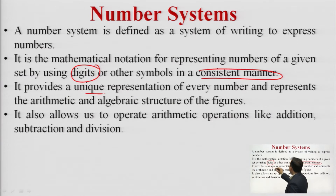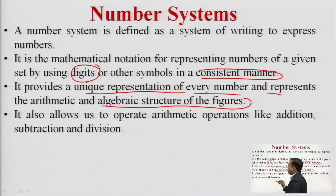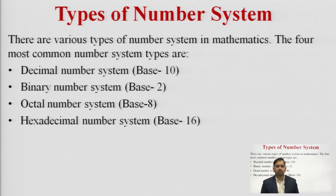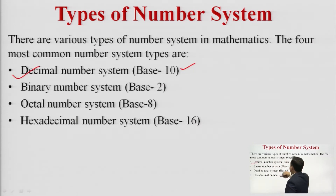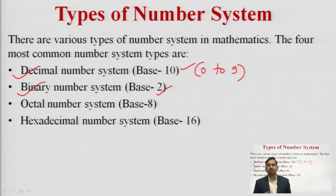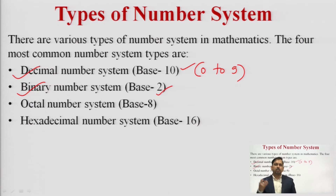The number system provides a unique representation of every number and represents the arithmetic and algebraic structure of figures. It also allows us to perform arithmetic operations like addition, subtraction, and division. We have types of number systems: the decimal number system where the base is 10 (digits 0 to 9), the binary number system where the base is 2, the octal number system where the base is 8, and the hexadecimal number system where the base is 16.